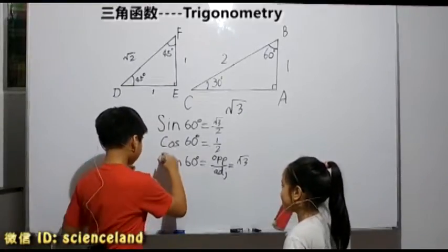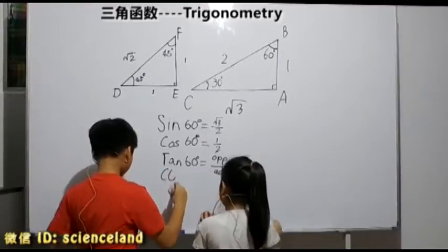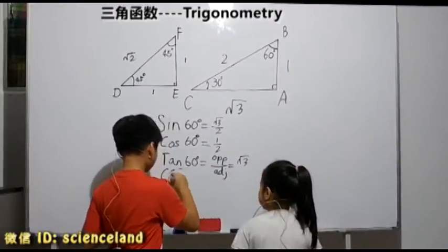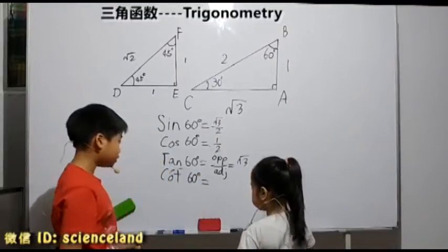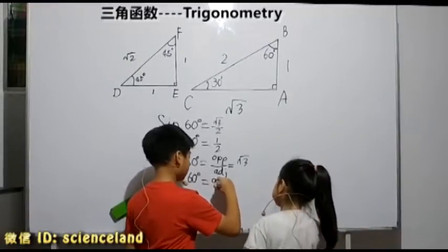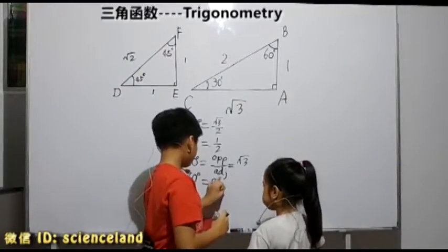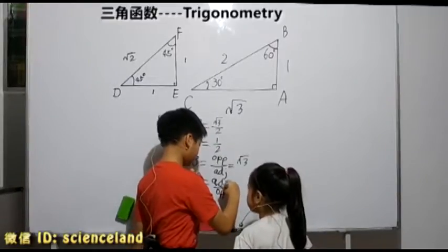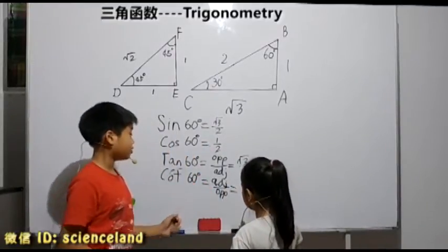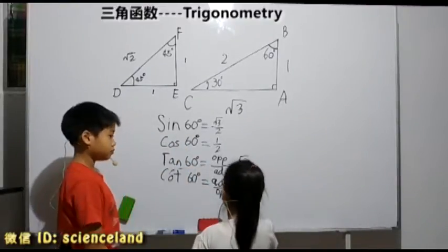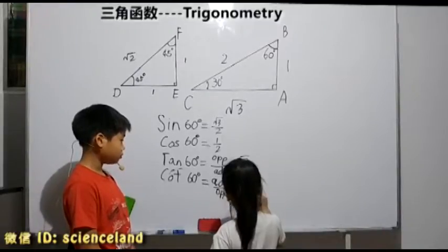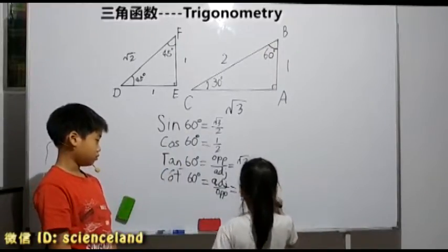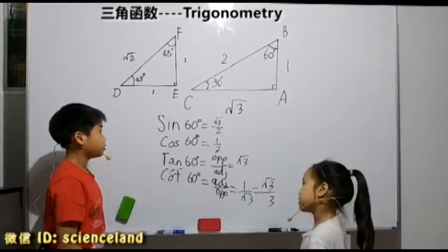Now we'll also be learning cotangent. Cotangent 60 degrees. Cotangent is the reverse of tangent, which becomes adjacent over opposite. Now we can solve it, okay. Remember, because yes, yes, very good.